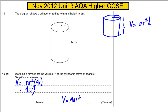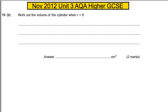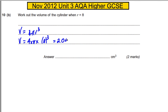For part B, it says work out the volume when R is 8. The volume is 4 pi R cubed, so the volume is 4 multiplied by pi multiplied by 8 cubed. This is simply a calculator exercise, and when we do that on the calculator we get 2048 pi, which if we decimalize it we get 6434 centimeters cubed.